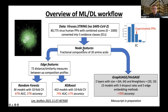Based on the data, we first extract node features and other protein features, which are fractional compositions of 20 amino acids. We are developing two different types of models: one is more classical machine learning models like random forest and XGBoost, and another is based on deep learning — specifically graph neural networks, using GraphSAGE or a generalized version called InSAGE. For classical machine learning, we also extract edge features, which are 72 distance or similarity measures between amino acid composition profiles of virus proteins and human proteins.